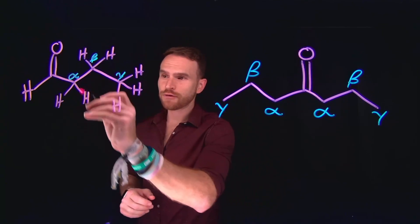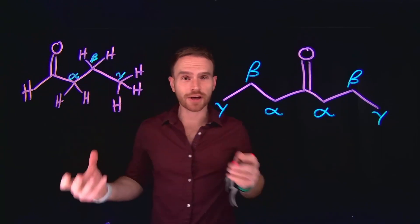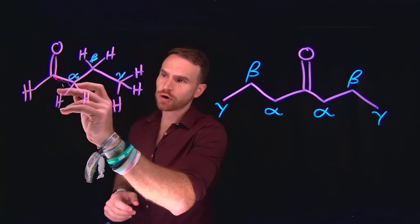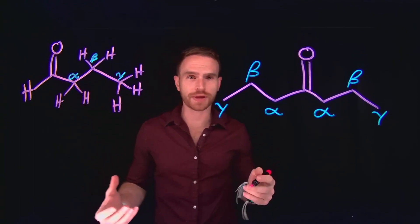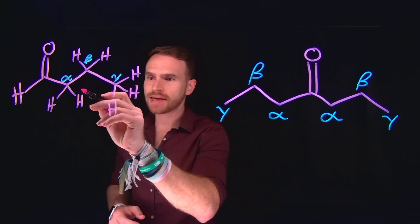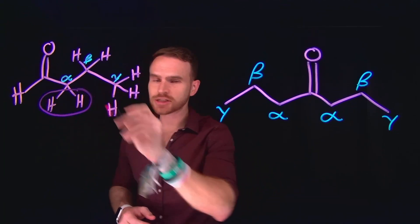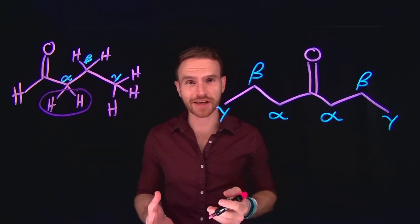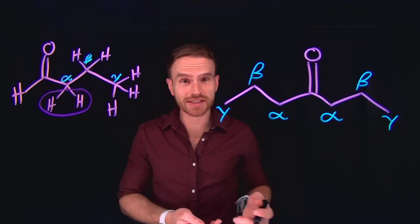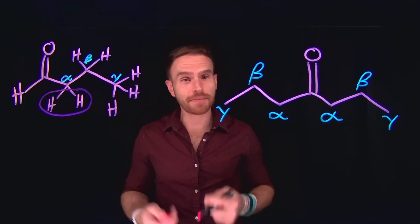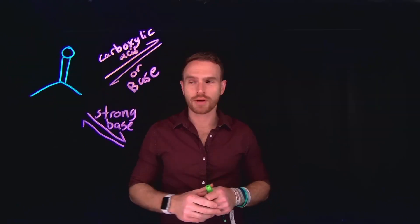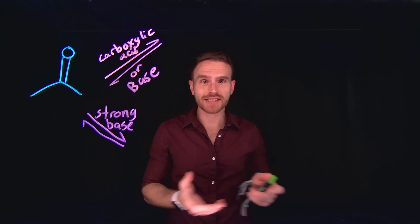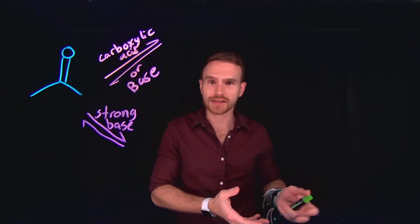This position, the alpha carbon, is crucial due to the electron-withdrawing nature of a carbonyl group. This makes the hydrogen atoms attached to the alpha carbon incredibly acidic. And since they're acidic, this makes them highly reactive. When a proton is removed from an alpha carbon, this generates enols and enolates.